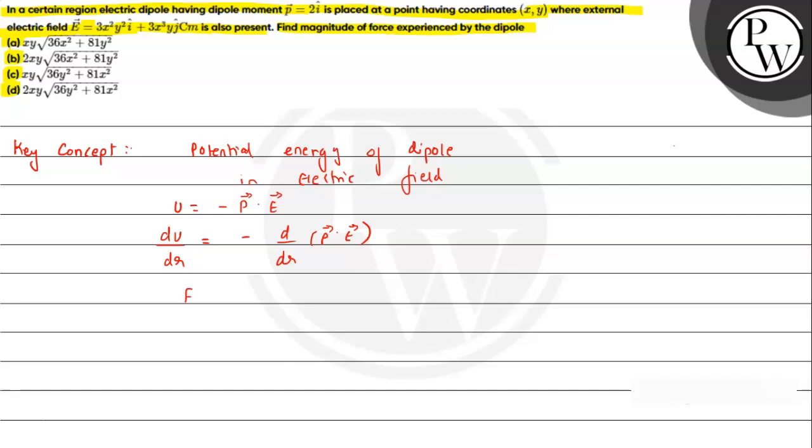We can write change in potential energy as negative of work done, or we can just write it as dU by dr for a conservative force. So here we can write F bar will be equal to negative of negative, which cancel. So F bar equals d by dr of P bar dot E bar.